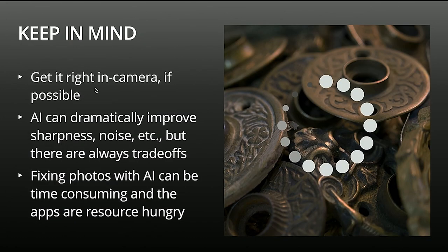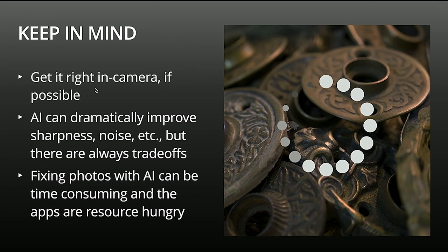A few things to keep in mind when using AI to process: you want to get it right in camera as much as possible. These tools are useful — they can fix a lot of things — but it's always better to have a clean file to start with. Don't use these programs as a crutch to get lazy with your settings. But in those times where you have to get the shot, take the shot and fix it later. AI can dramatically improve things, but there are always trade-offs. With noise reduction, sometimes you can lose some critical detail, most evident on fine details like hair, fur on animals, or texture on objects. The AI tools do a pretty good job of retaining it, but there is a slight trade-off.